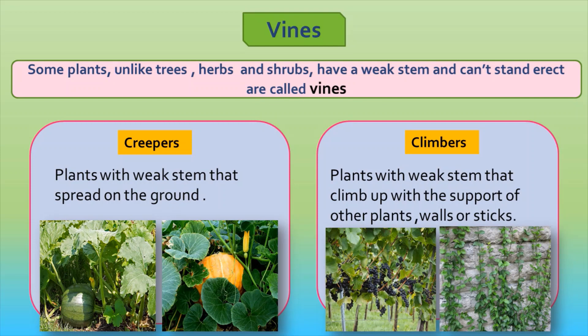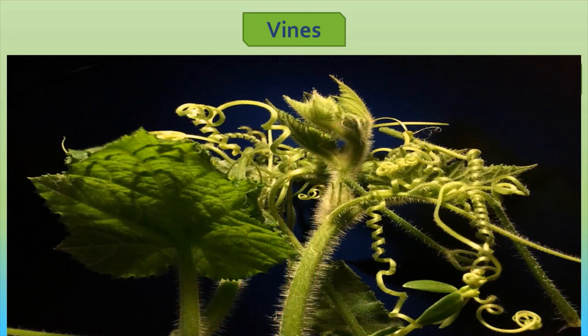Climbers, like money plant, have aerial roots. Vines have tendrils to get support. Tendrils look like a spring.